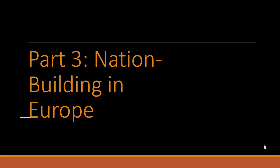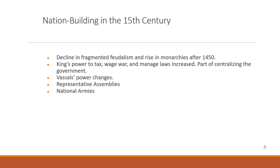This leads us to our last part: Part Three, nation building in Europe. Nation-state building began in the 15th century. We see a decline in fragmented feudalism and a real rise in monarchies after 1450. Monarchies controlled their kingdoms very powerfully—the king had the power to attack, wage war, and manage laws, with increasingly more power after 1450. This is part of the centralization of government in Europe, and the power of lords and vassals changed accordingly.